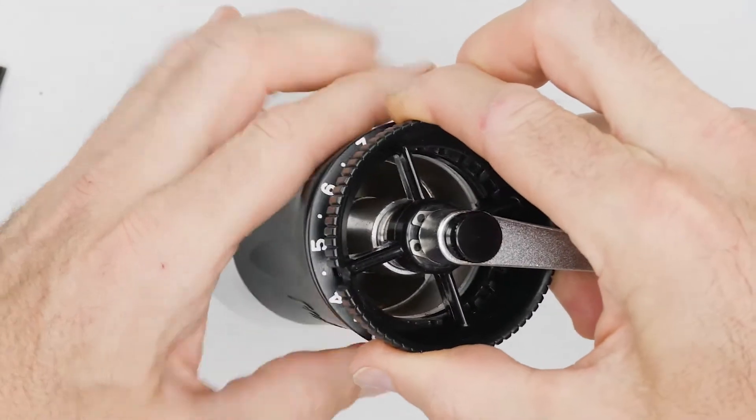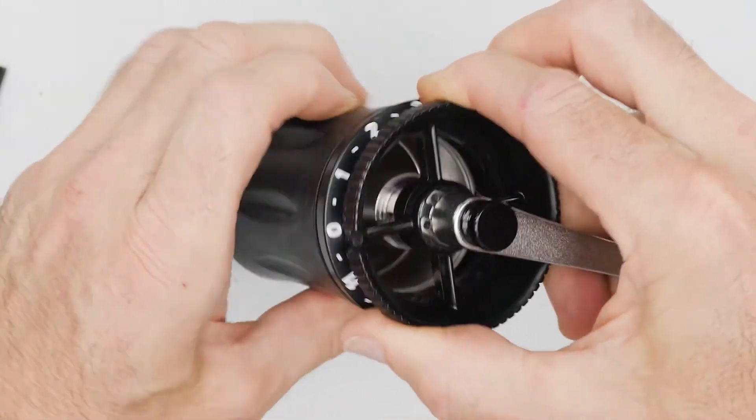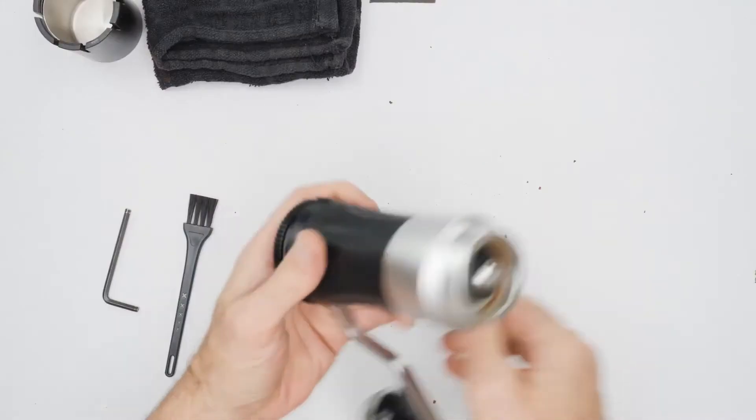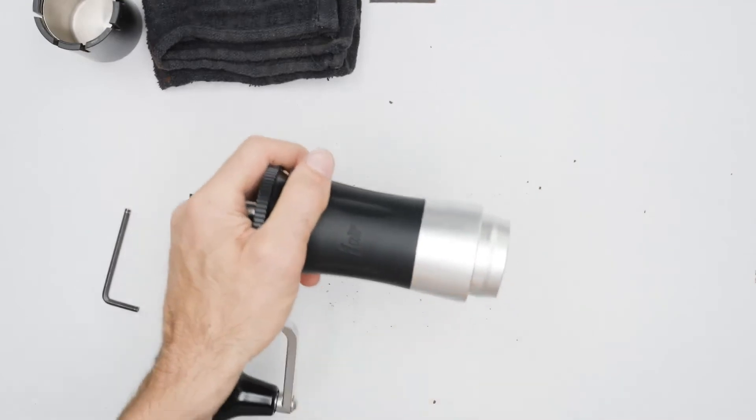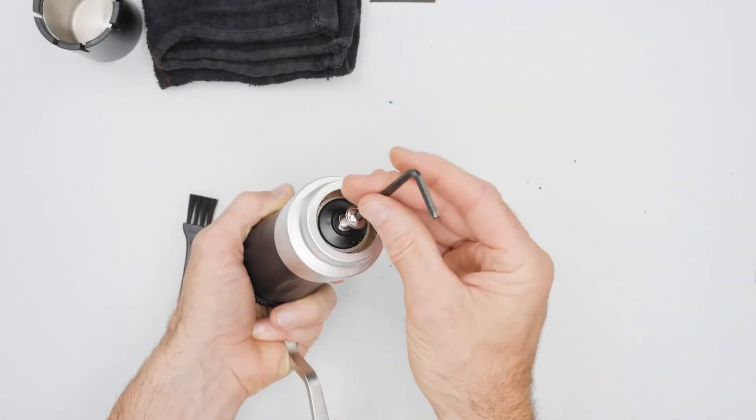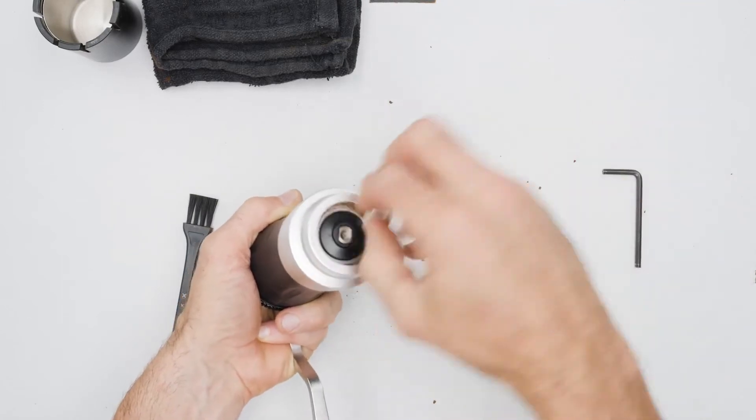Before removing the cone burr, it's important to set the grinder to a coarse setting. Secure the crank with one hand, then using the four-millimeter Allen key, loosen and remove the bolt securing the burr and the burr retainer to the axle.